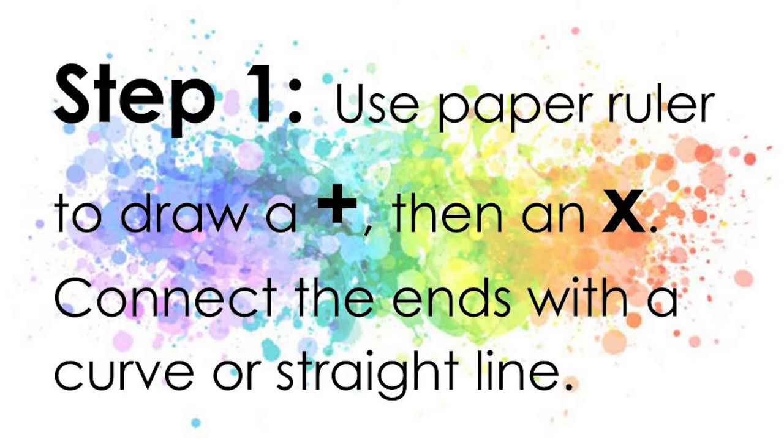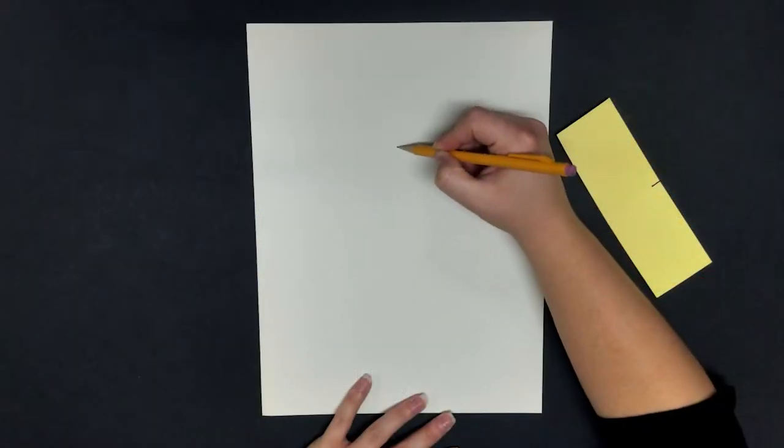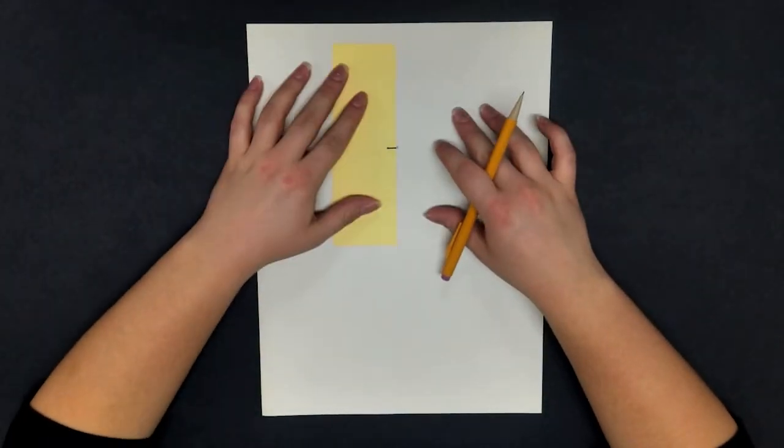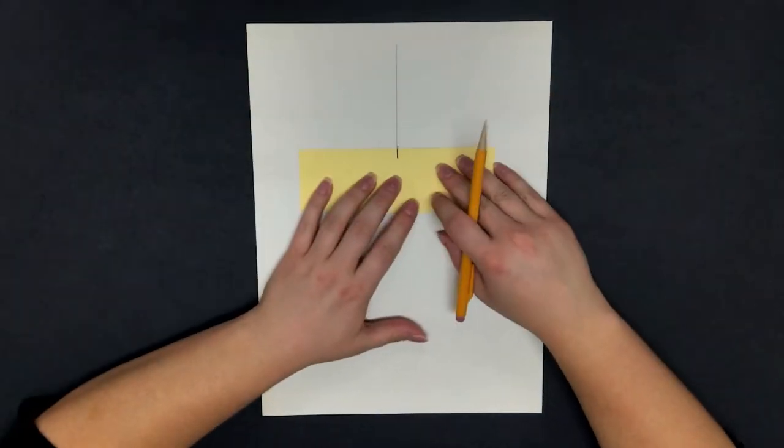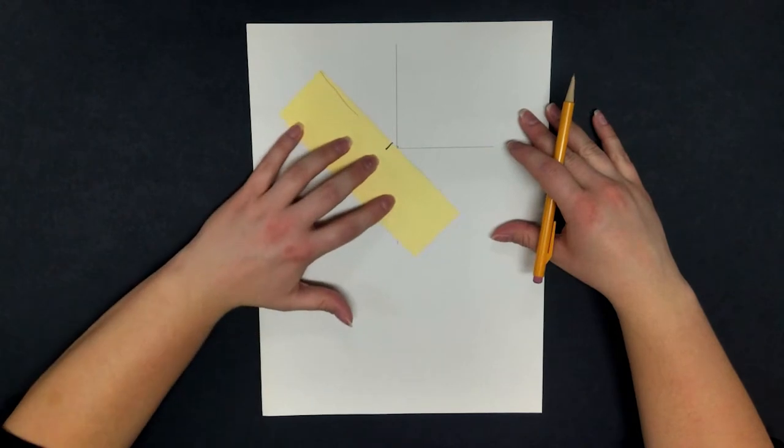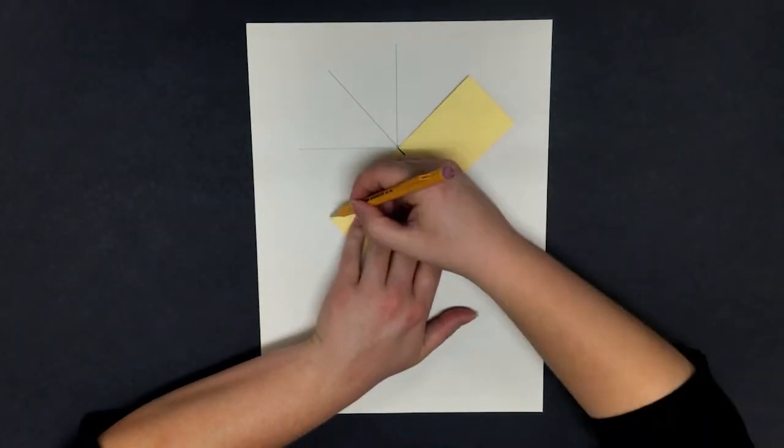In step number one, we're going to draw the outline of our umbrella. Start by placing a dot in the middle at the top of your paper, then use your paper ruler to draw a plus. Using the same method, go back and make an X.